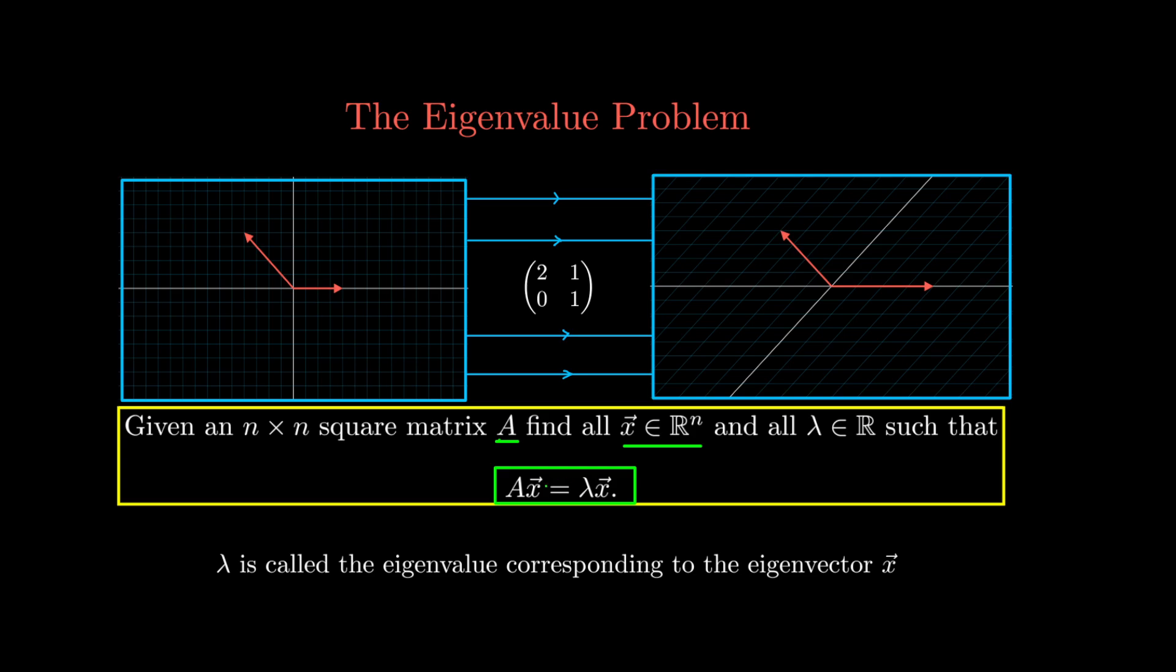So when this is the case, when we're given such an X and such a lambda, then we say that lambda is the eigenvalue which corresponds to this eigenvector X. So these two pieces of data come in pairs. And so we're interested in being able to solve for two things, namely what is lambda and what are these vectors X and how to find them.